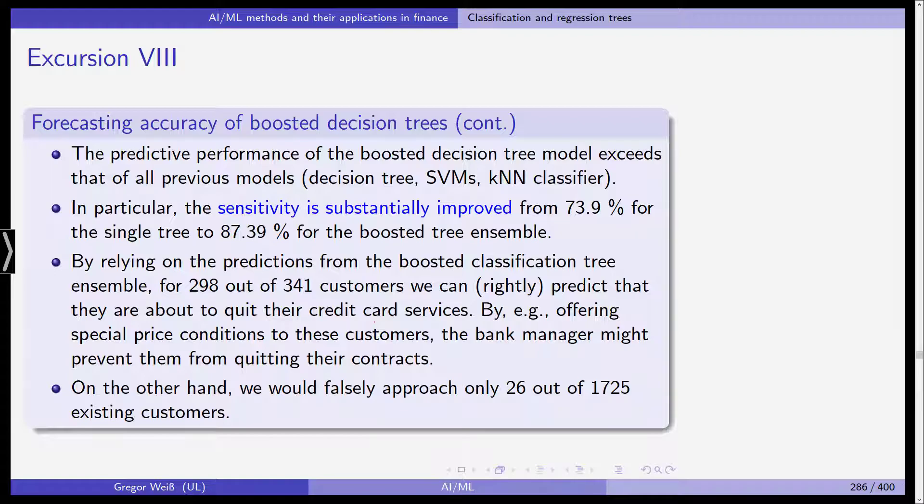And by relying on the predictions from the boosted classification tree, for almost 300 out of the 341 customers, we can rightly predict that they are about to quit these services. So this leads to the increase in sensitivity and then the manager could act on this. On the other hand, we would falsely approach only 26 out of 1725 existing customers. So yes, this could be a way to move forward.